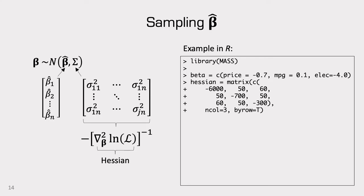So far we've only looked at point estimates of willingness to pay and market shares. But recall from the video on uncertainty — we can use simulation to generate draws of our model coefficients that reflect the uncertainty in the estimated parameters. As a refresher, recall the example with coefficients and a Hessian matrix that resulted from estimating a model via maximum likelihood estimation.